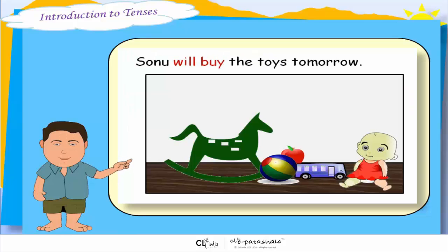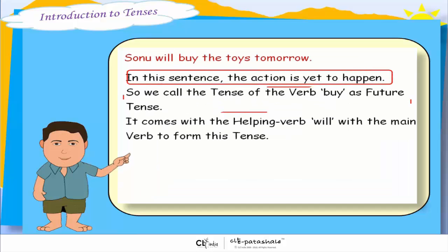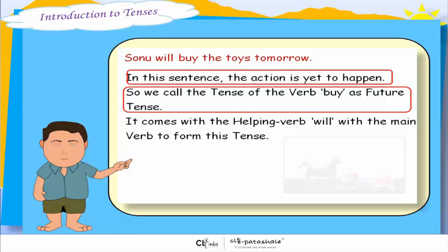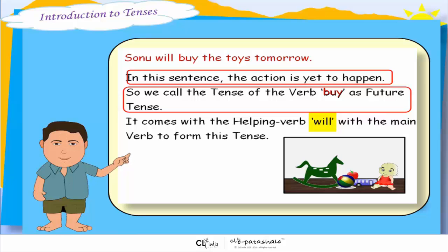'Sonu will buy the toys tomorrow.' In this sentence, the action is yet to happen. So we call the tense of the verb 'buy' the future tense. It comes with the helping verb 'will' with the main verb to form this tense.